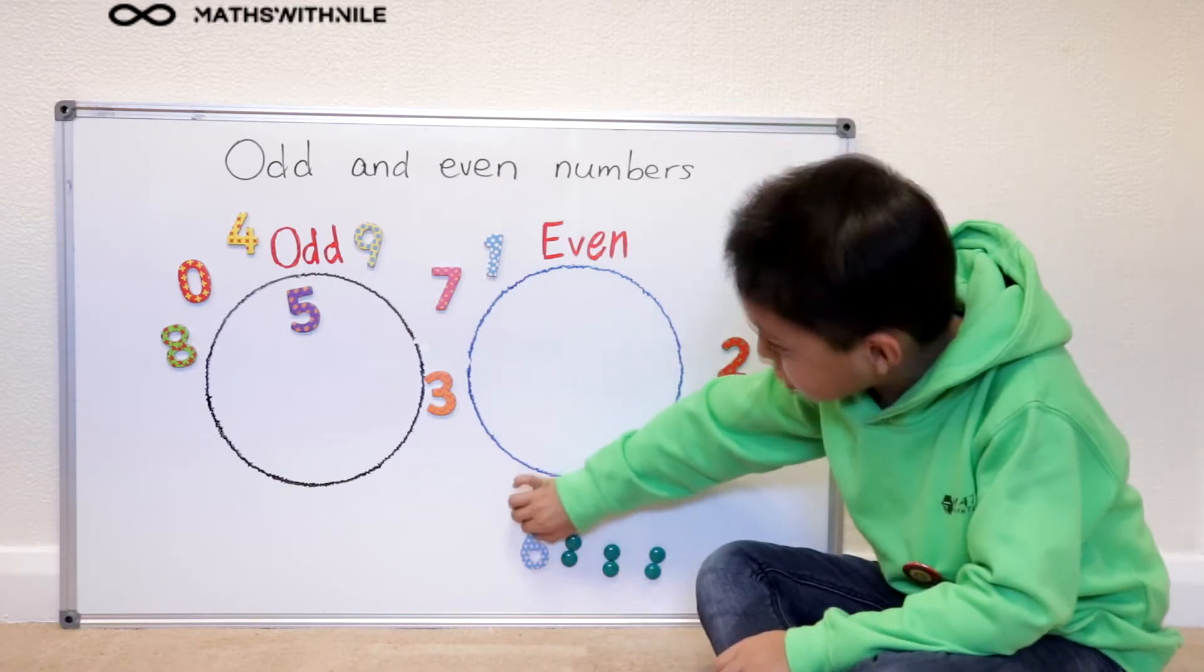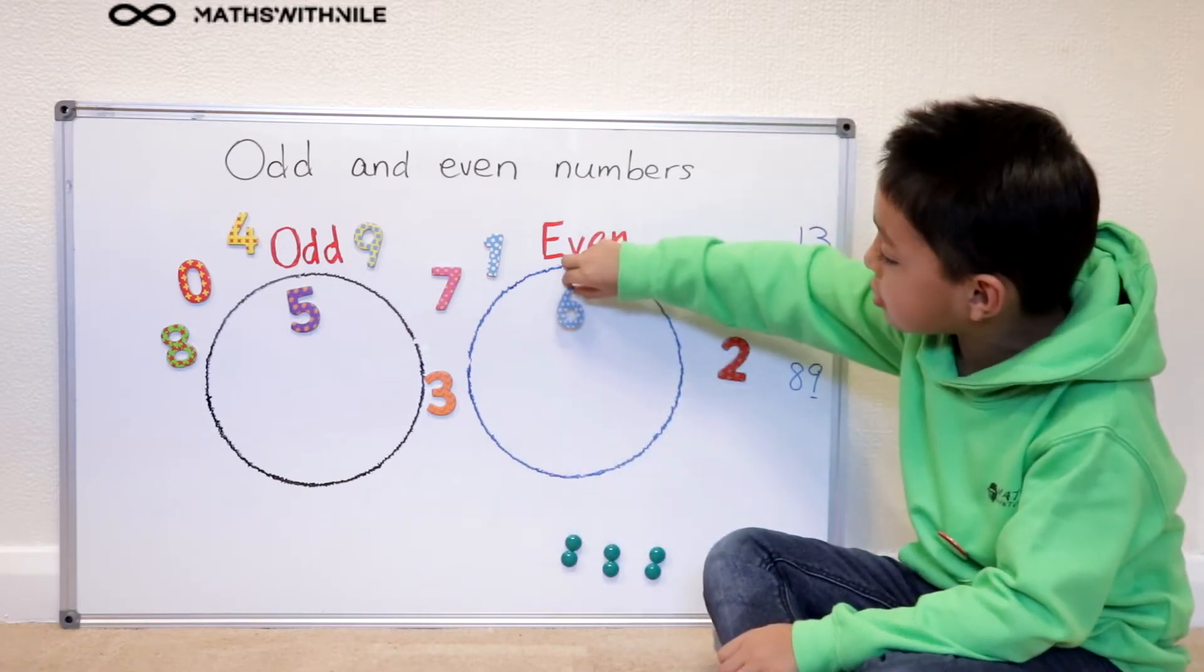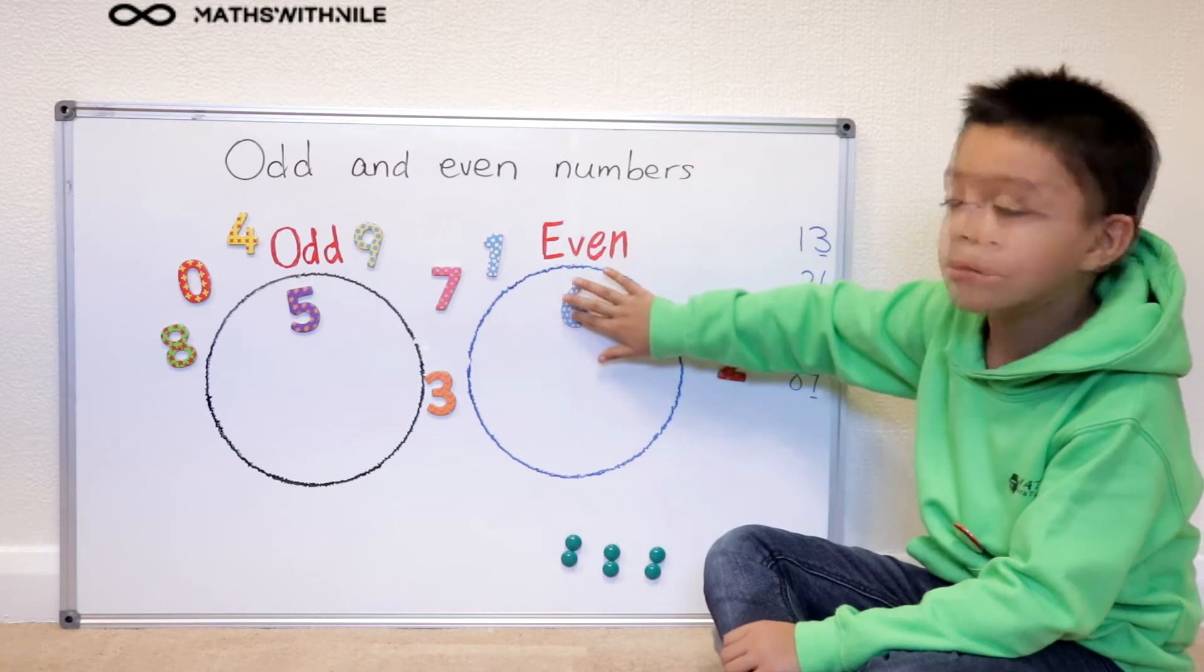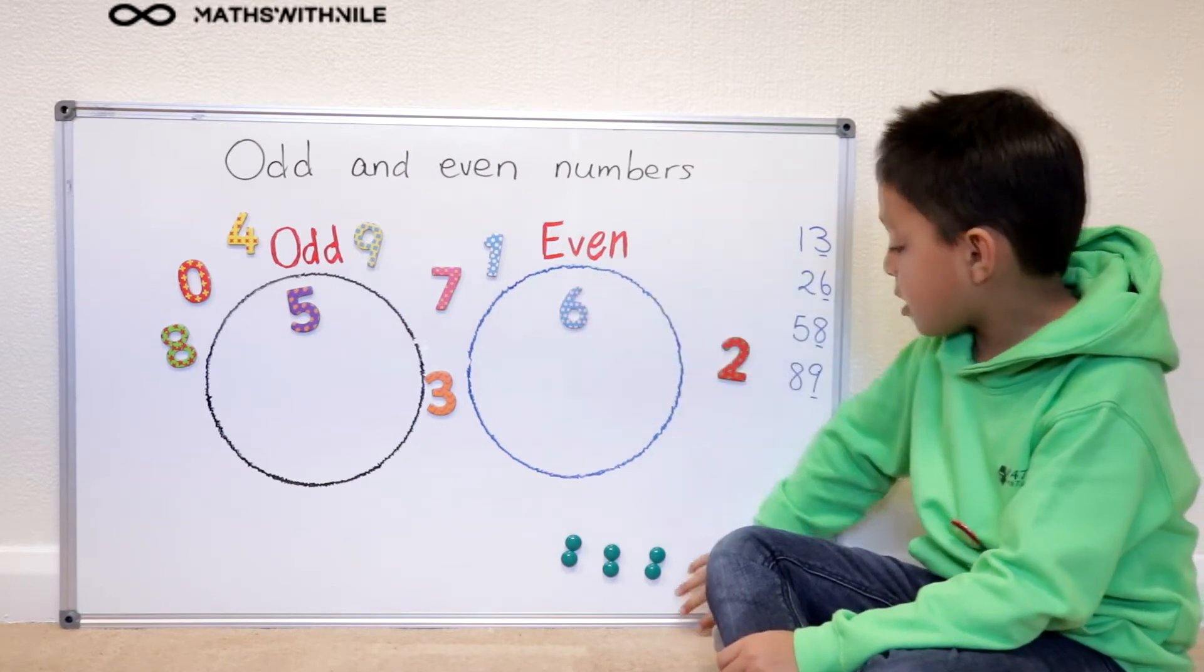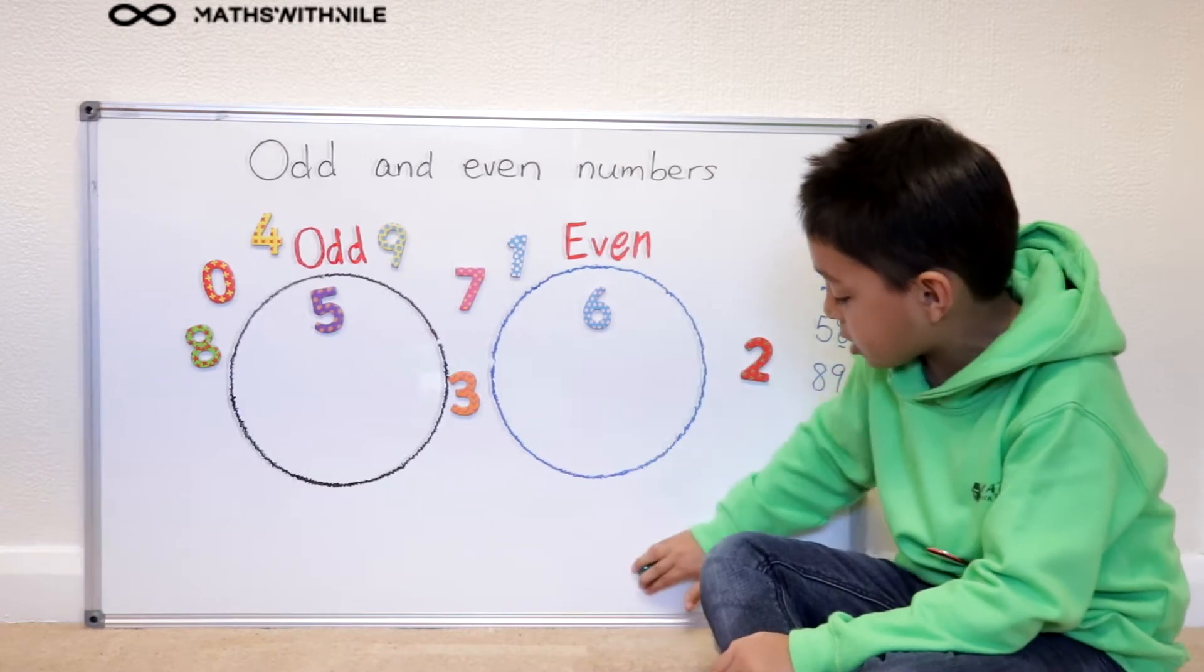So I'll put this in the even number group. And then I'll put these counters back.